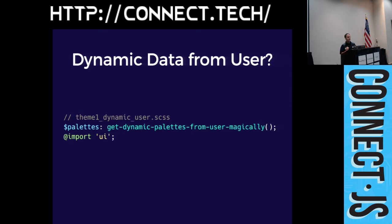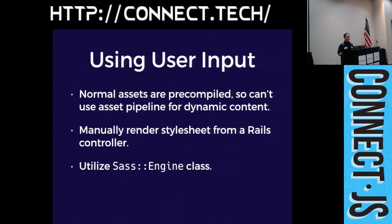We still need to get user input down to the stylesheet. Normally, assets like stylesheets are static — you pre-compile them for production and serve them via CDN. So we can't do anything dynamically with those. We'll have to manually render from a Rails controller, and that's how we'll utilize the Sass::Engine class.